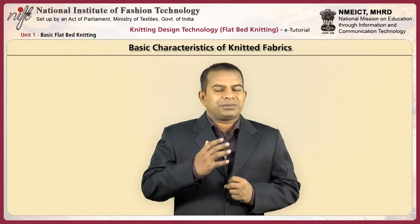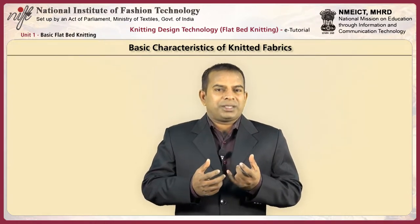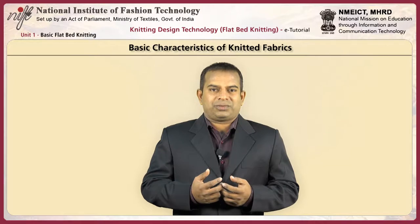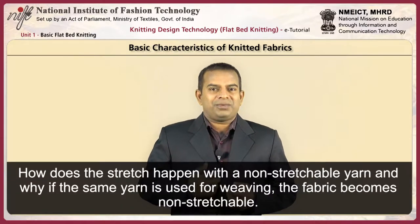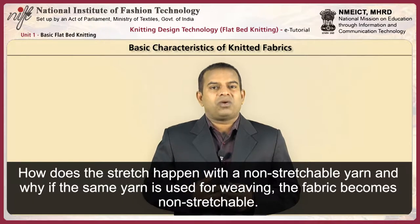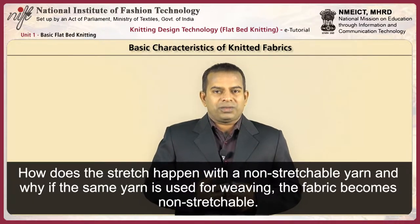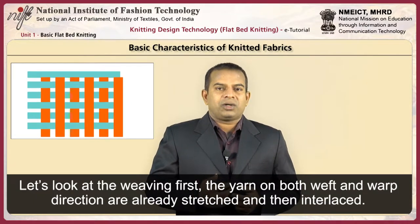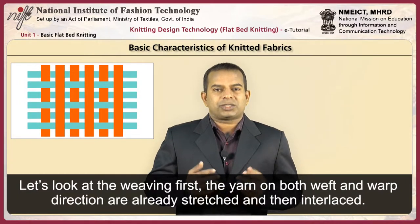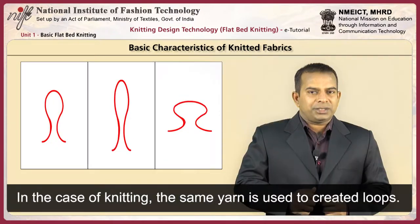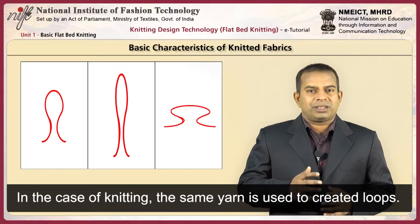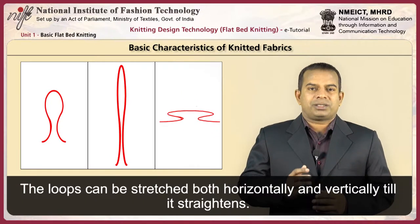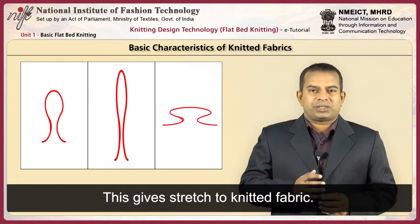So how is knitted fabric different from wovens when you hold it? Probably the stretch is the most noticeable characteristic. Stretch is achieved even with a non-stretchable yarn. In weaving, the yarn on both warp and weft directions are already stretched and then interlaced. In knitting, the same yarn is used to create loops, which can be stretched both horizontally and vertically until they straighten up — this gives the stretch to knit fabric.